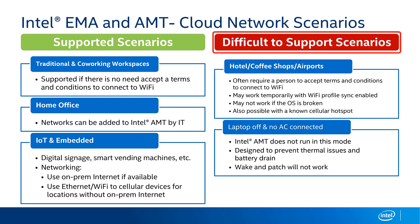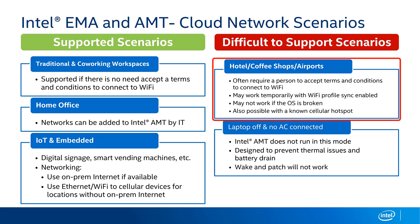Now let's talk about difficult-to-support scenarios. These are cases where you have a captive portal you must authenticate with to get on Wi-Fi — such as at a coffee shop, restaurant, or airport, where you attach to Wi-Fi, open a browser, accept terms and conditions, and possibly supply an email address. In most cases that's fine for Intel EMA, Intel AMT, and manageability. However, if you're unable to accept those terms and conditions — for example, if you just got off a plane and your laptop has a problem — there's no way for AMT to authenticate with that network either. I just want to make sure we're clear on that.